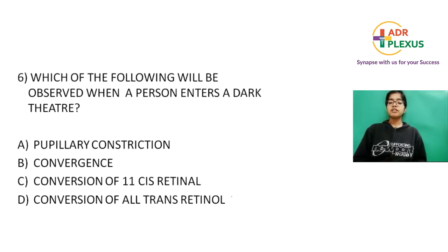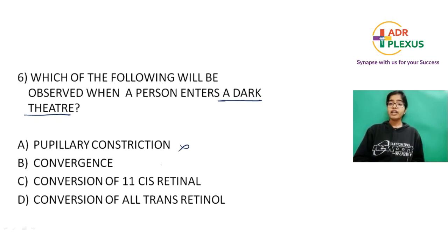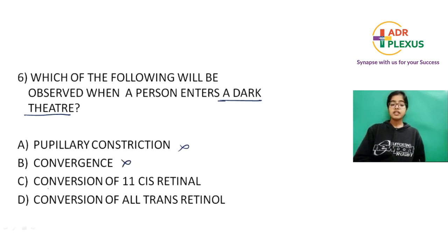Next question: what is observed when a person enters a dark theater? Pupillary constriction is wrong - the pupil dilates in dark areas. Convergence is part of the accommodation reflex and will not occur. The answer involves the visual cycle. A key mnemonic: think of a sandwich of retinol - retinol, retinol, retinol, retinol - all-trans on the outside as bread, and 11-cis as the filling with toothpicks.